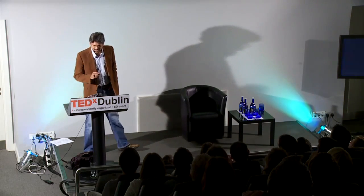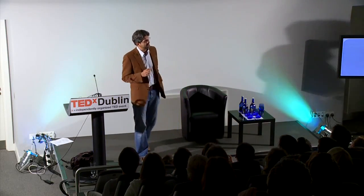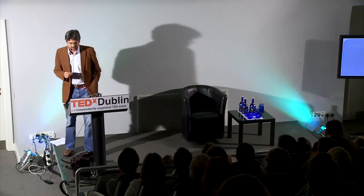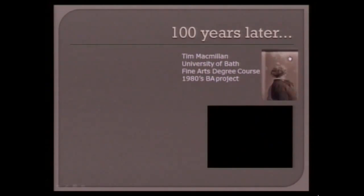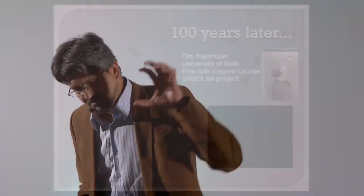We now skip forward about 100 years to about 1980 and a man called Tim McMillan. Tim was just finishing up his degree in arts at the University of Bath, and he knew about Muybridge's funny-looking pictures. He also knew about pictures from a guy called Nadar, a contemporary of Jules Verne — an interesting set of pictures showing views of an object from different points of view, from about 1860. Tim said: cubism is about expressing different points of view in one picture. All of film is about expressing different points in time from one point in space. So if you want to make cubist film, you've got to do different points in space at one point in time.